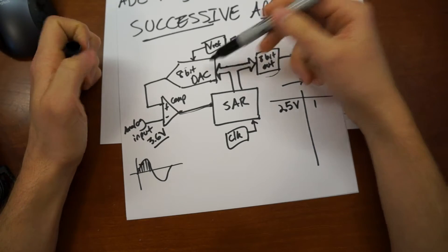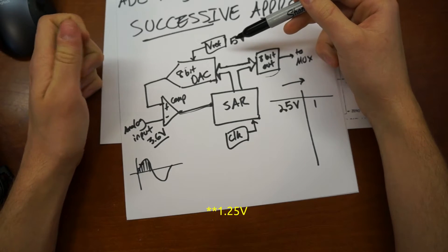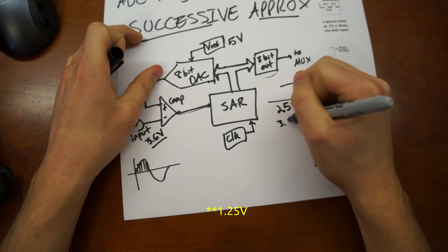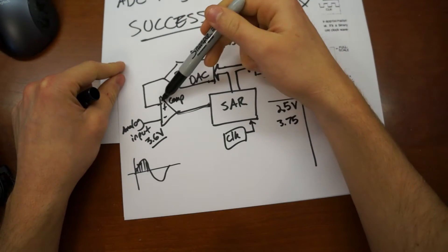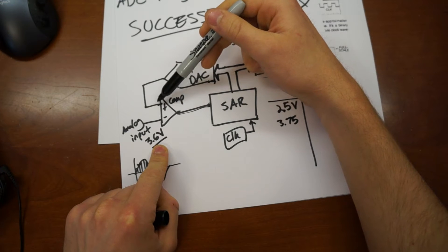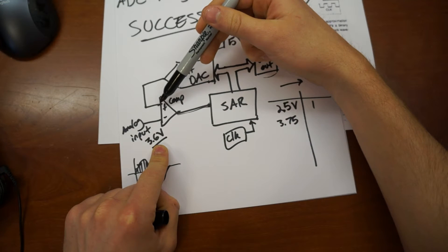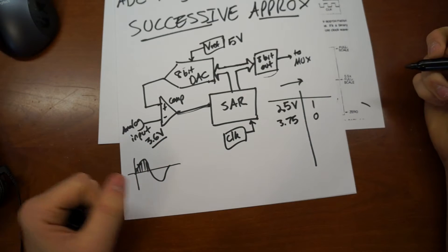So 1.25. So we get a 3.75 as our voltage reference. And it comes in here to the comparator and says, okay, is my input voltage of 3.6 greater than or less than the 3.75? And, of course, it's less than, so we get a zero on that output.